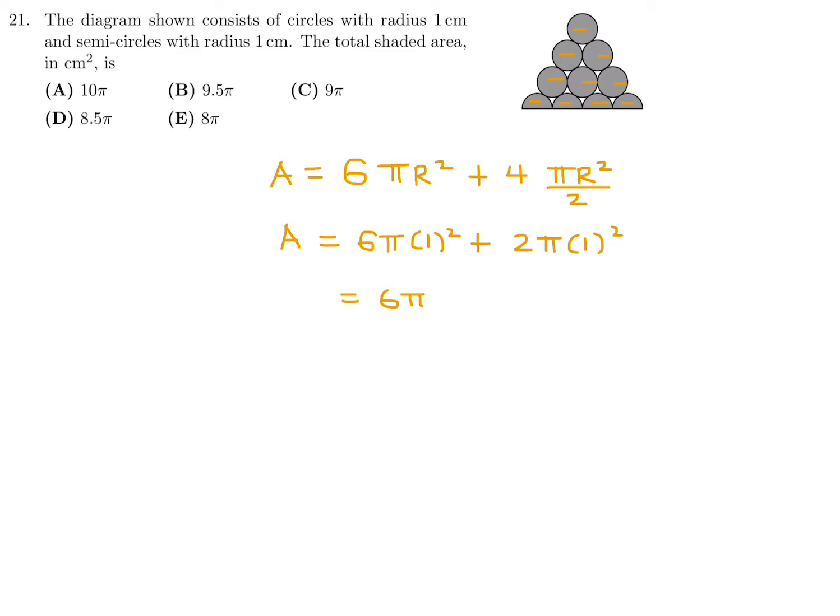So this is what we have to calculate. So 6 pi, r is 1, and then this 4 divided by 2 is 2, so 2 pi r is 1. This is 6 pi, this is 2 pi, and therefore total is 8 pi. So number 21, the answer is E.